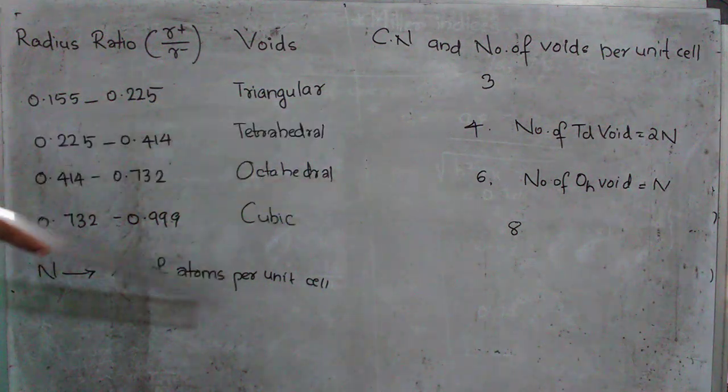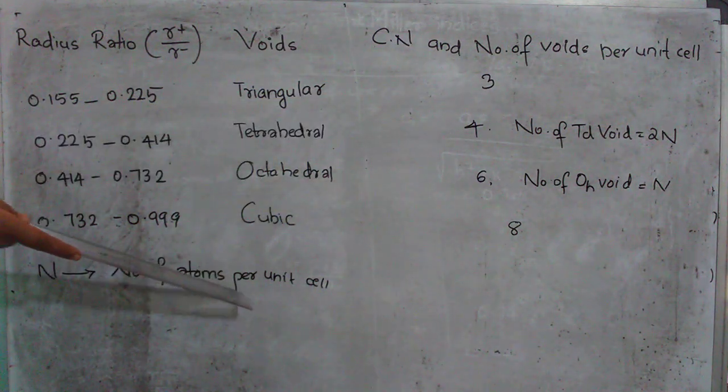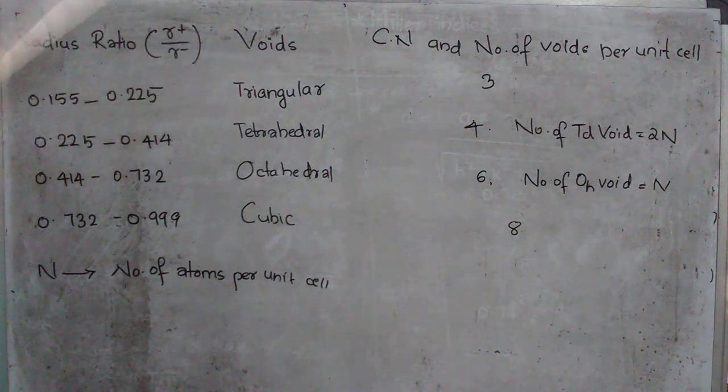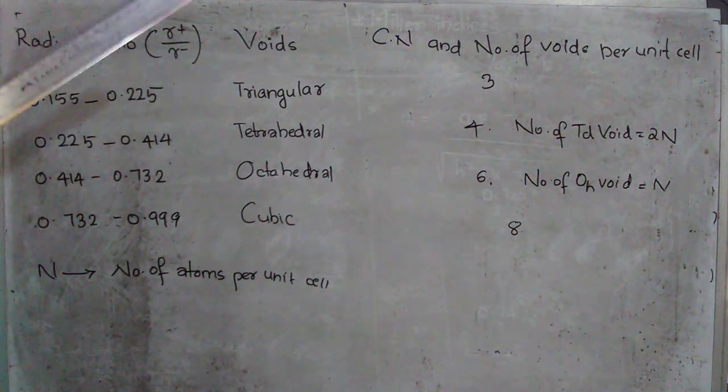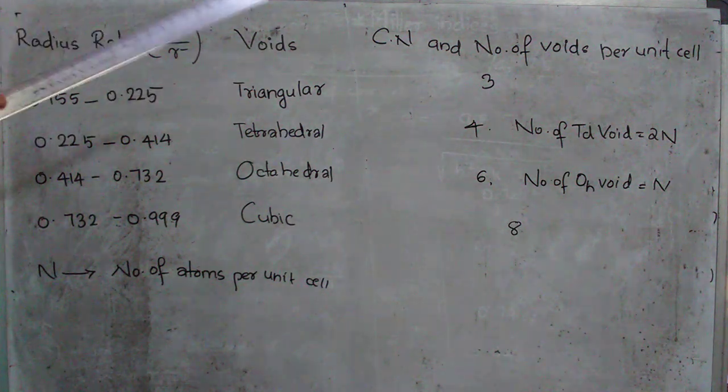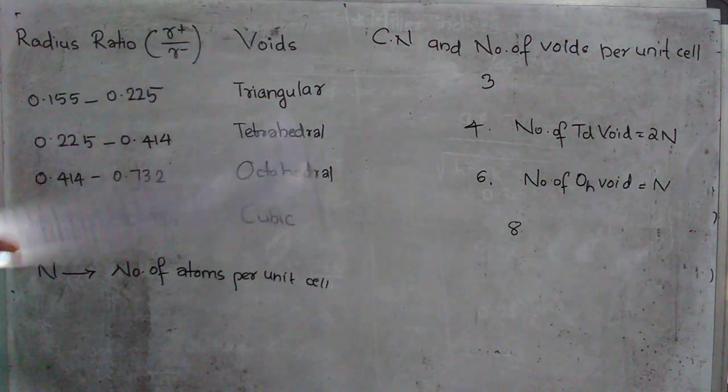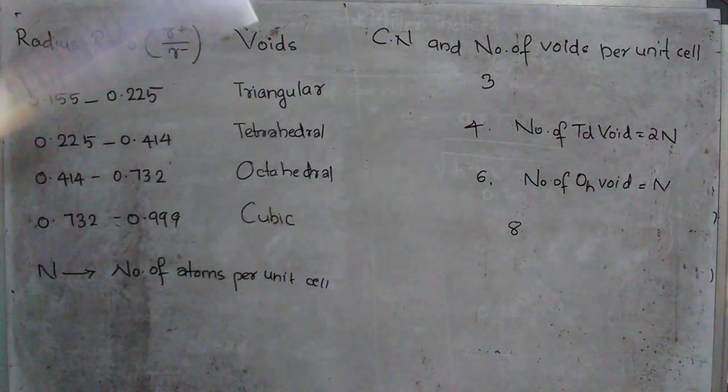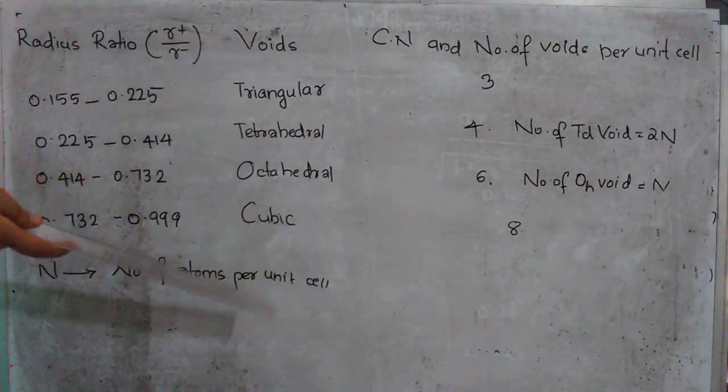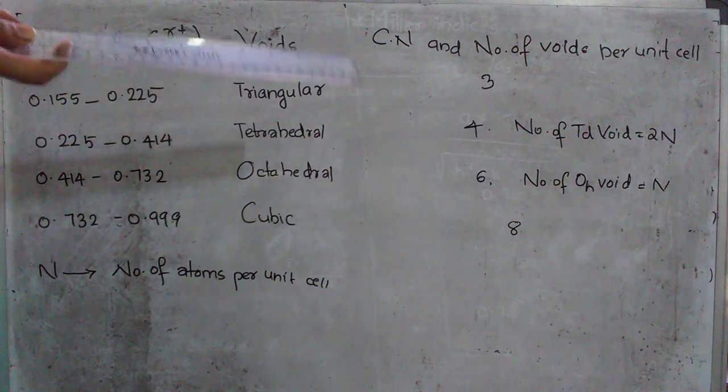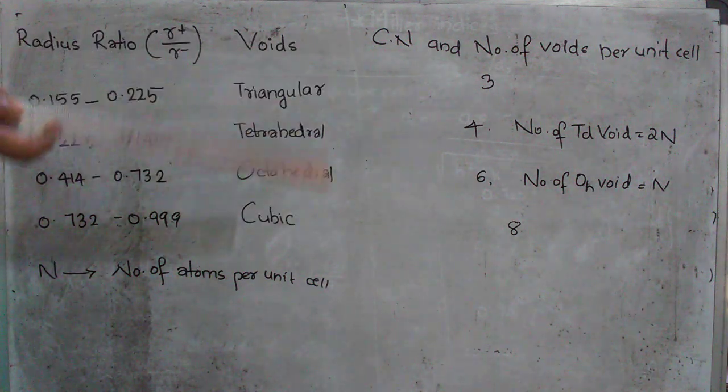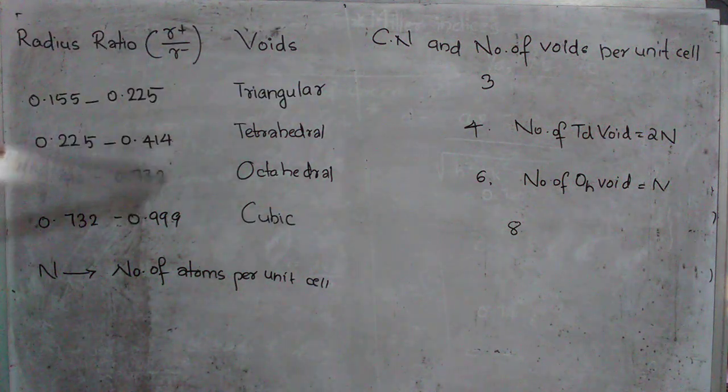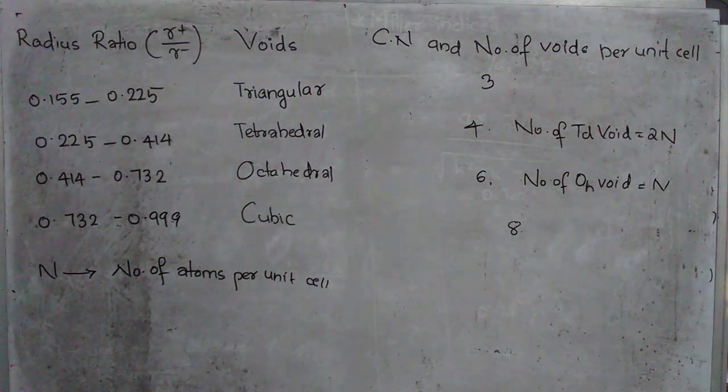Now here, in case of tetrahedral and octahedral voids, we are giving the coordination number as 4 and 6 but the number of tetrahedral voids will be 2N and octahedral voids will be N where N is the number of atoms per unit cell. Now, usually questions come in this way that a particle occupies 1/8 of the octahedral voids or tetrahedral voids. So from that we need to find the formula of the crystal system. In those cases, we have to use this 2N and N. Only then we can come to the formula of the particular crystal system. So this is another important topic.